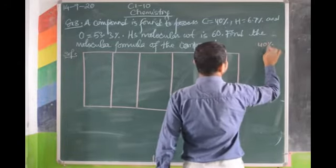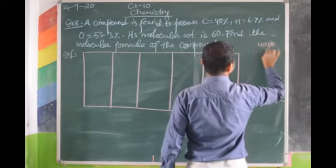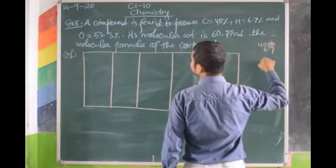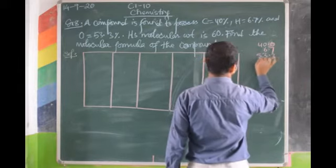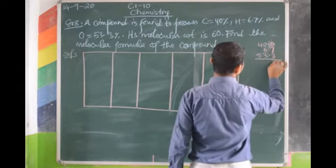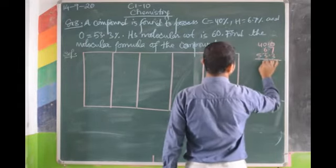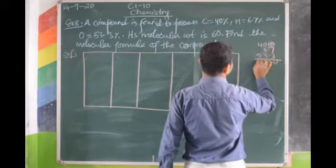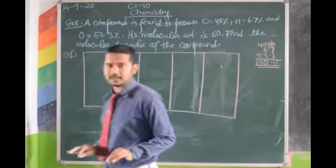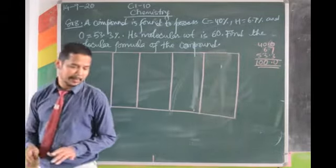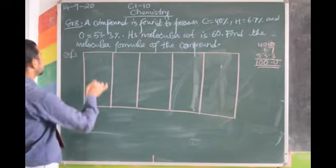Whenever percentage is given, add all the percentages to check if they total 100%. Here: 40% + 6.7% + 53.3% = 100%. So everything is given, nothing is missing.